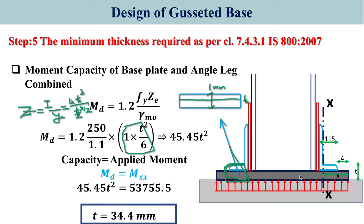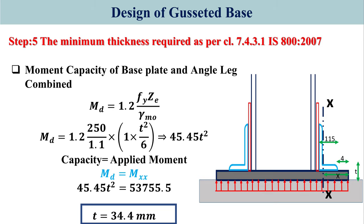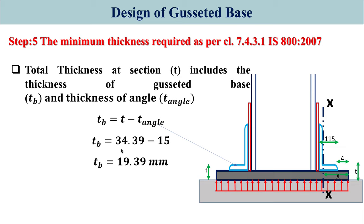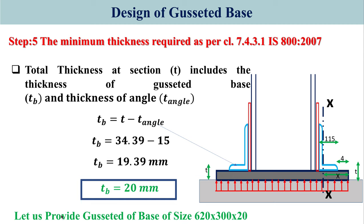This total thickness t includes the gusset base plate thickness tb and the angle thickness t_angle. So tb = t - t_angle = 34.4 - 15 = 19.4 mm, rounding up to 20 mm. Therefore, provide the gazetted base of length 620 mm, width 300 mm, and thickness 20 mm.